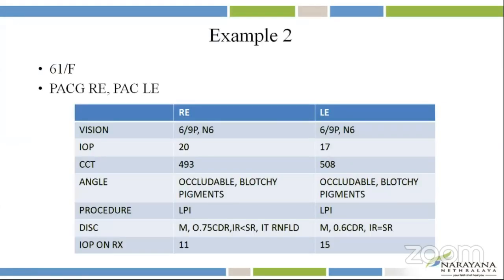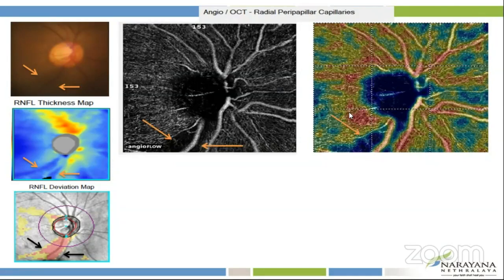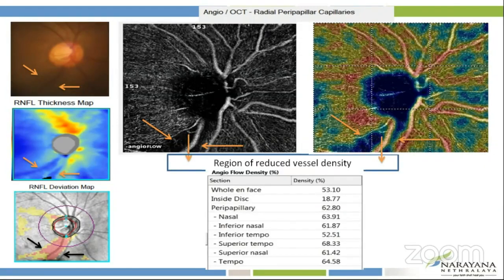Example two is a 61-year-old female with right eye PACG and left eye PACG. Her angles were occludable in both eyes and an LPI had been done. The right eye disc was a medium-sized disc with a 0.75 cup-to-disc ratio with an inferior temporal RNFL defect. We can see the inferior RNFL defect on the optic disc image, the thinning on OCT-RNFL, and a reduction in the vessel density on the OCTA images with an inferior temporal reduction on the index.